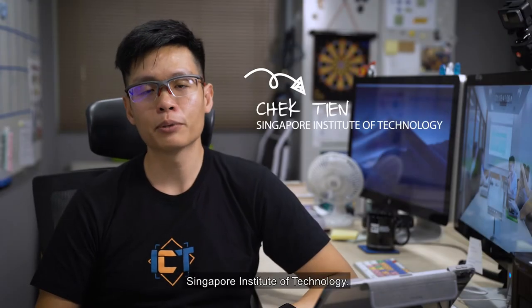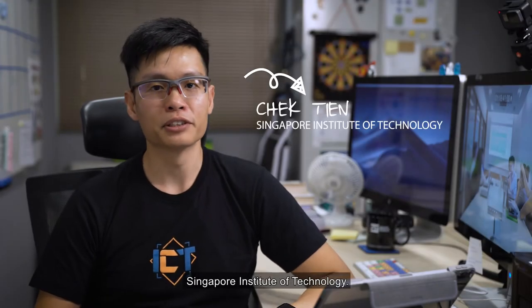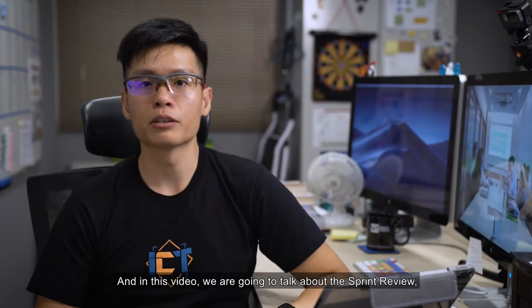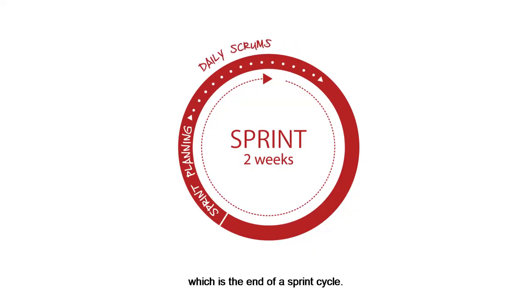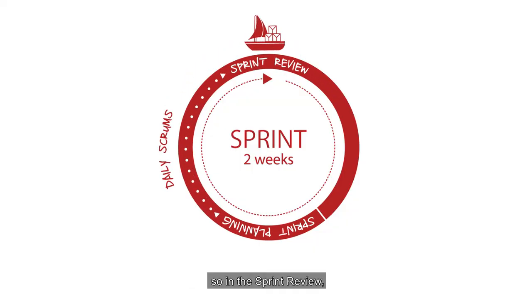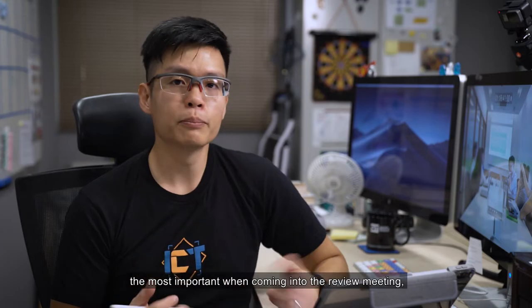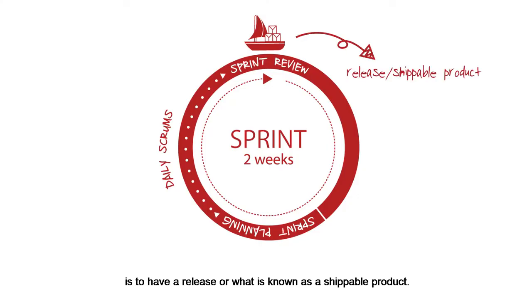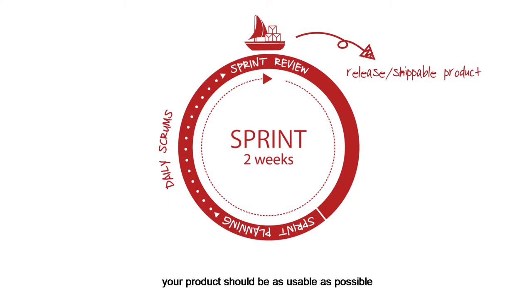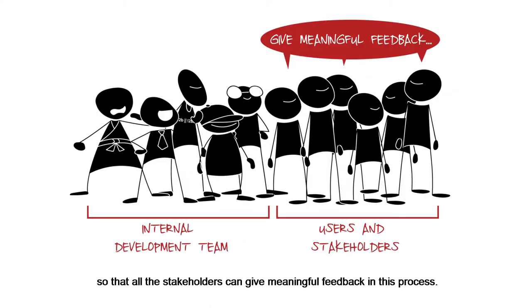I'm Chek from SIT, Singapore Institute of Technology, and in this video we're going to talk about the sprint review, which is the end of a sprint cycle. In a sprint review, the most important thing when coming into the review meeting is to have a release, or what is known as a shippable product. This means that your product should be as usable as possible so that all the stakeholders can give meaningful feedback in this process.